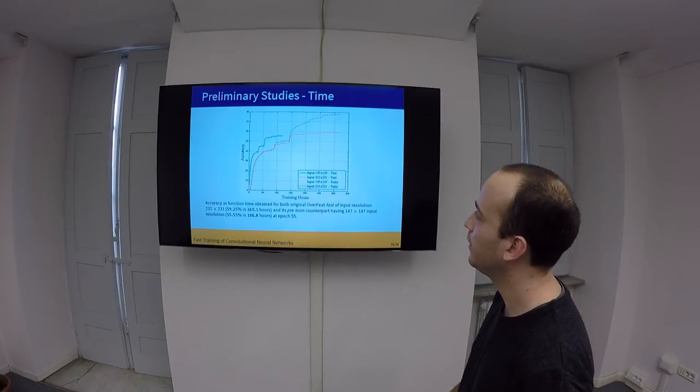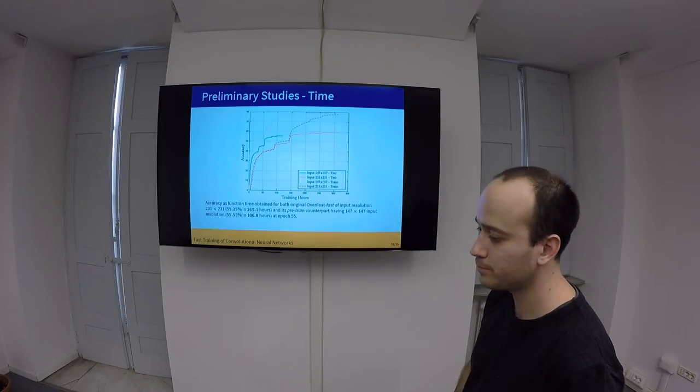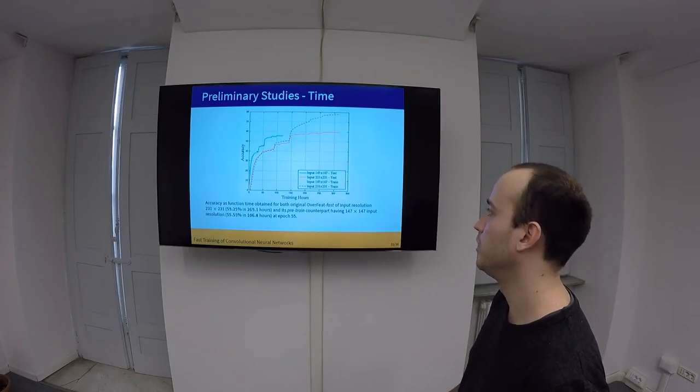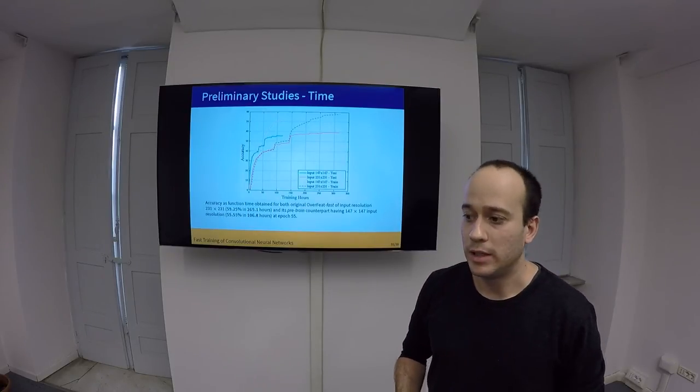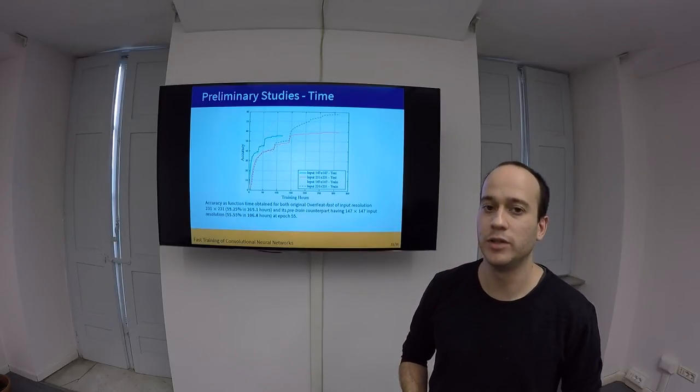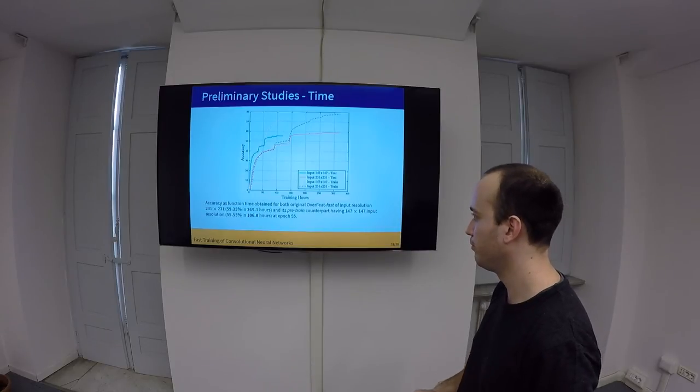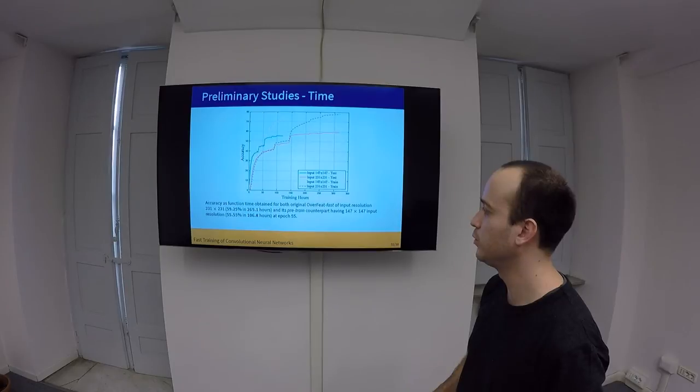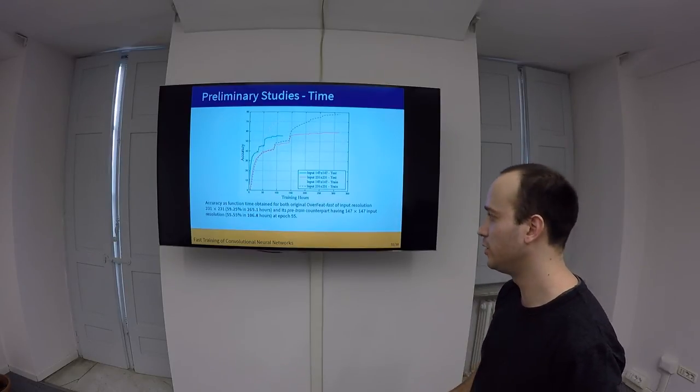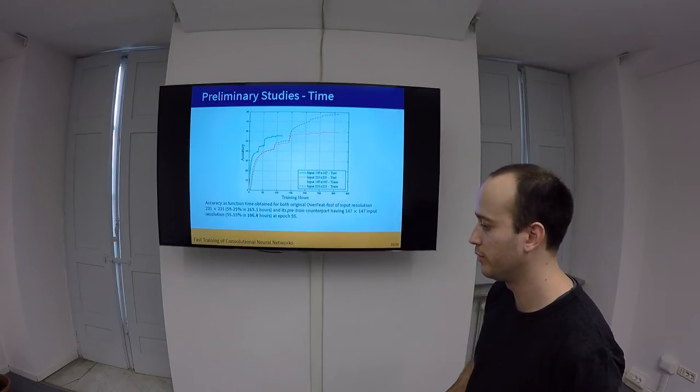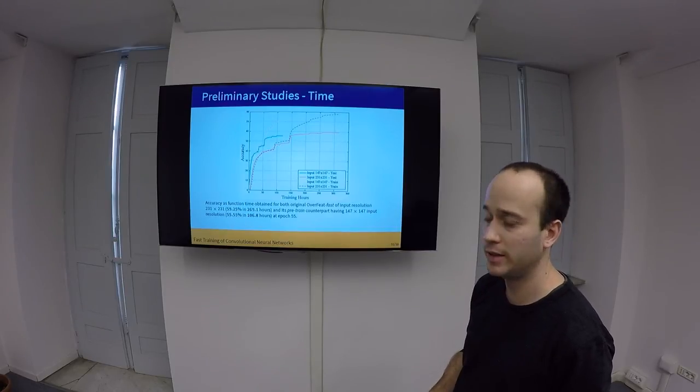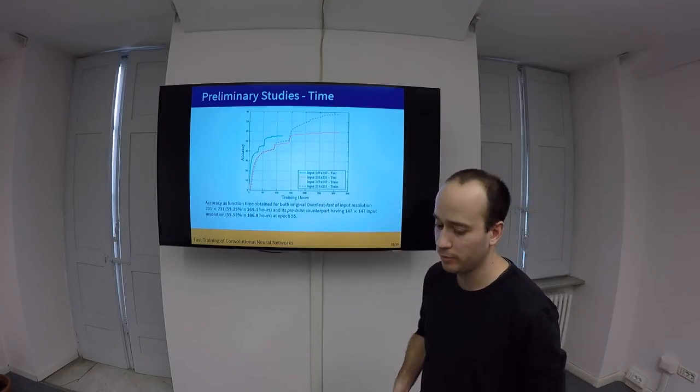However, we can also see that the red line, the red continuous line, is our validation for the bigger network. And we can also see that it actually is higher than the one trained with the smaller network. And this is actually expected. As we said earlier, some higher frequencies in images cannot be captured with smaller kernels. So, basically, the training with the bigger network using 55 epochs took 259.1 hours and achieved 59.25% accuracy, while the smaller one would be trained in less than half of this training time, but it only achieved 55.55% accuracy.